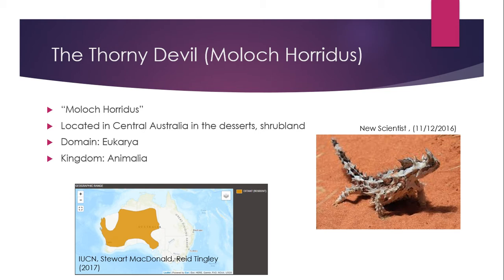The Thorny Devil's domain is Eukarya, which includes organisms that have cells that include a nucleus as well as membrane-bound organelles. The Thorny Devil also belongs to the kingdom Animalia, which are just multicellular eukaryotic organisms.